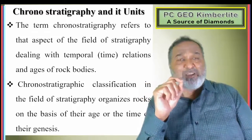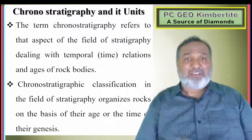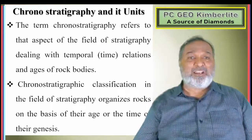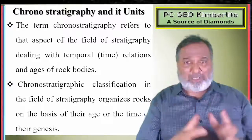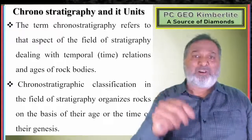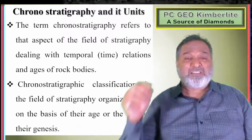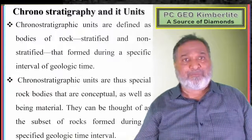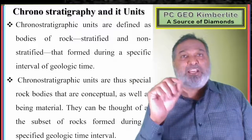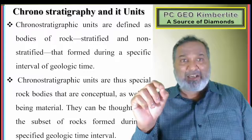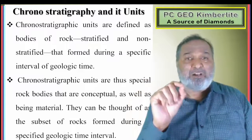Chronostratigraphy classifies rocks in the field of stratigraphy on the basis of their age or the time of their genesis. Whatever we organize into the vertical column in stratigraphy is based on the age of the rock or the time of their genesis — when these rocks were formed. Chronostratigraphic units are defined as bodies of rock, stratified and non-stratified, that form during a specific interval of geological time.